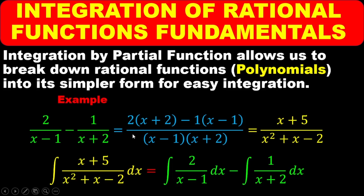So this 2 multiplies this, giving us 2 into brackets (x plus 2). And this 1 multiplies this, giving us minus 1 times (x minus 1). Then we do some expansion: 2 times x gives us 2x, and 2 times 2 gives us 4. Then minus 1 times x gives us minus x, and minus 1 times minus 1 gives us positive 1. When we add them: 2x minus x gives us x, and 4 plus 1 gives us 5. So this is the polynomial we are talking about.